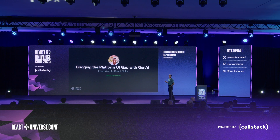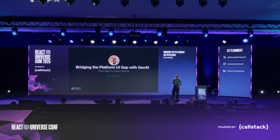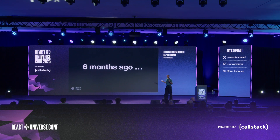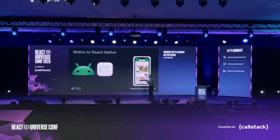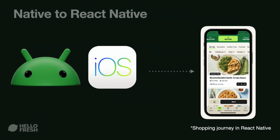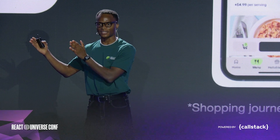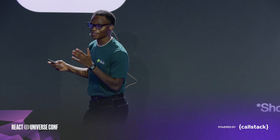My name is Hans-Emmanuel, and I work as a staff engineer for HelloFresh, the world's largest meal-kit company. Today I'm going to be talking about bridging the platform UI gap with Gen AI. Everything I'm going to talk about started six months ago when myself and a relatively small team were tasked with migrating existing native apps — iOS and Android — into React Native. The flow I'm talking about is essentially the shopping journey: when you come on the application, whether mobile or web, you want to shop, choose your meals, check what's in your cart. By every stretch of imagination, it wasn't a simple project.